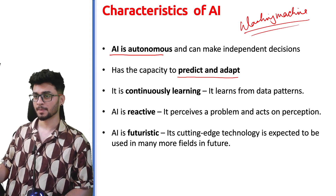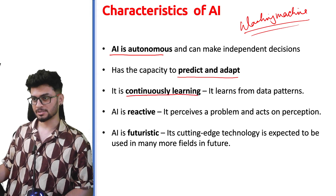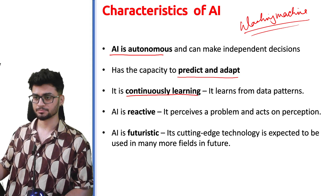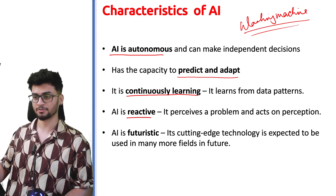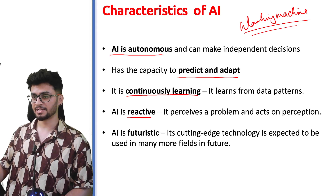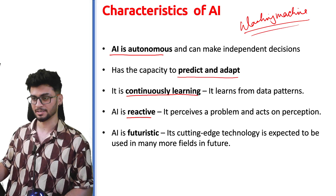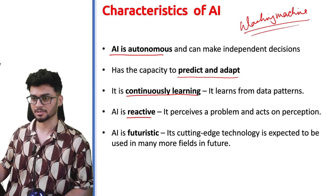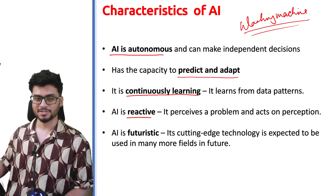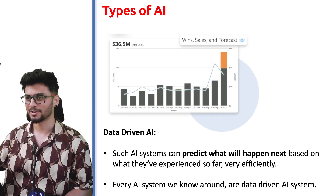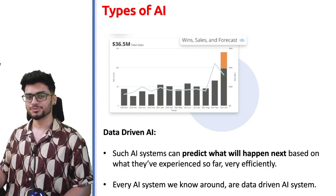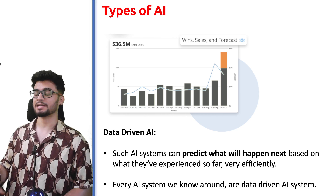AI is continuously learning, just like humans do. AI is also reactive — if you give it a new condition or put a new event in front of it, it will react accordingly. Self-driving cars are the best example of this. AI is also futuristic — it is already the future now. So those are the characteristics. Now let's look at the types of AI.